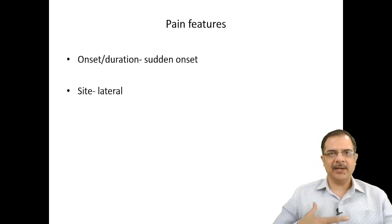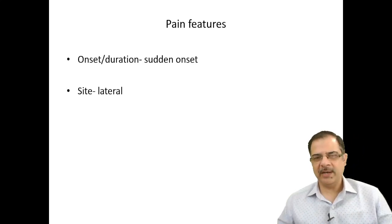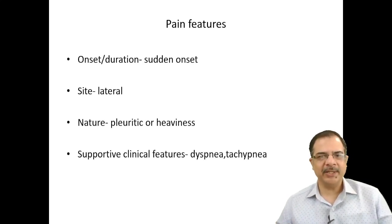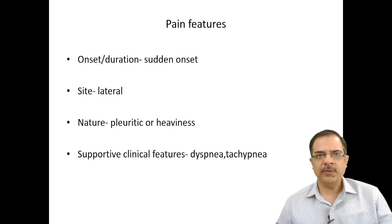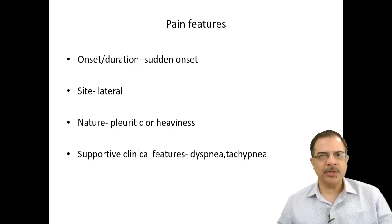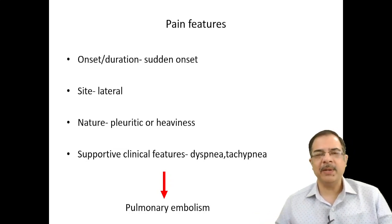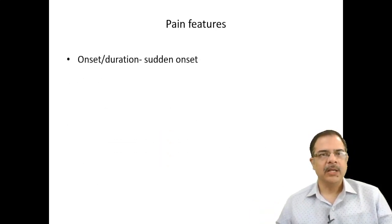If the pain is sudden onset, lateral in site — either right or left side — described as pleuritic or some heaviness in the chest, with dyspnea and tachypnea on examination, but breath sounds and percussion are normal and no mediastinal shift is seen, this is suggestive of pulmonary embolism. Evidence of deep vein thrombosis may be absent.